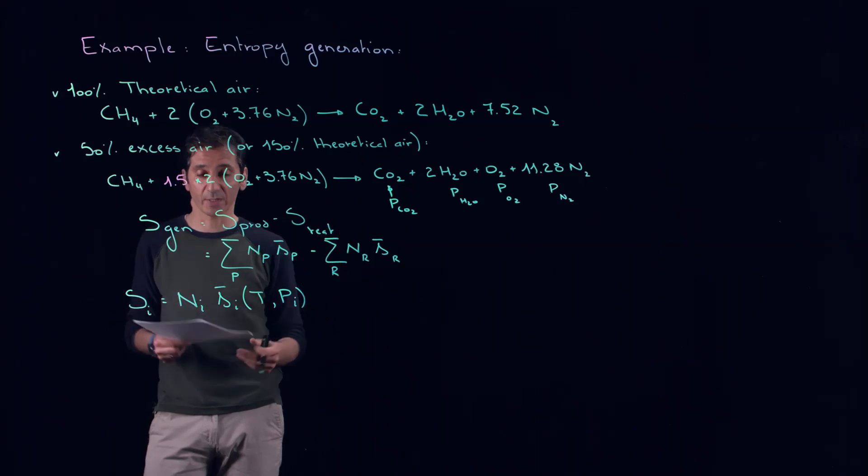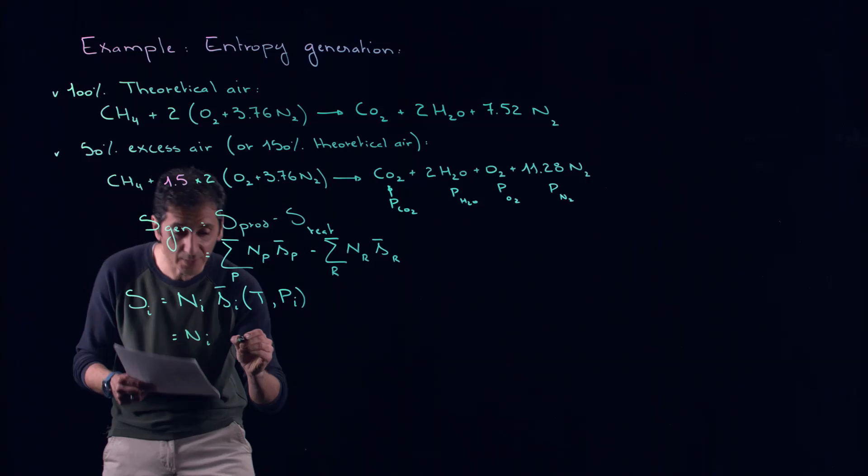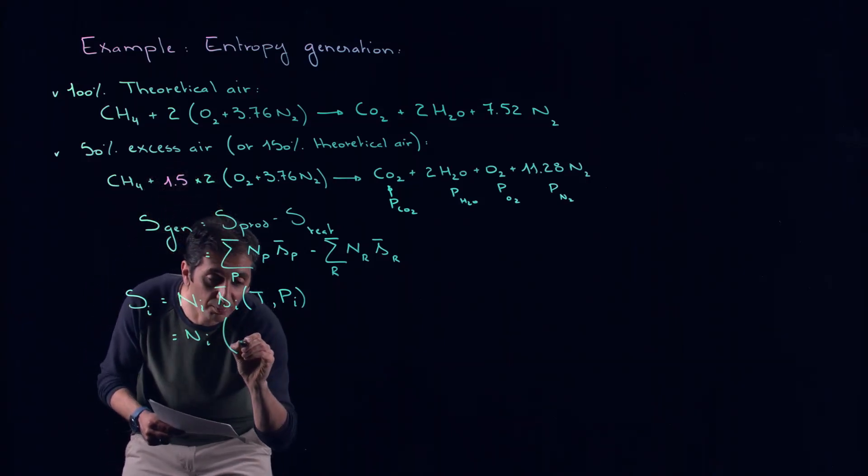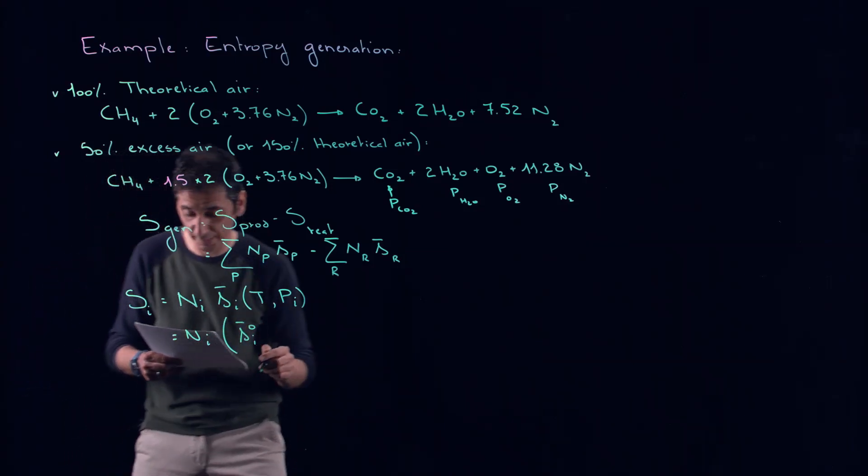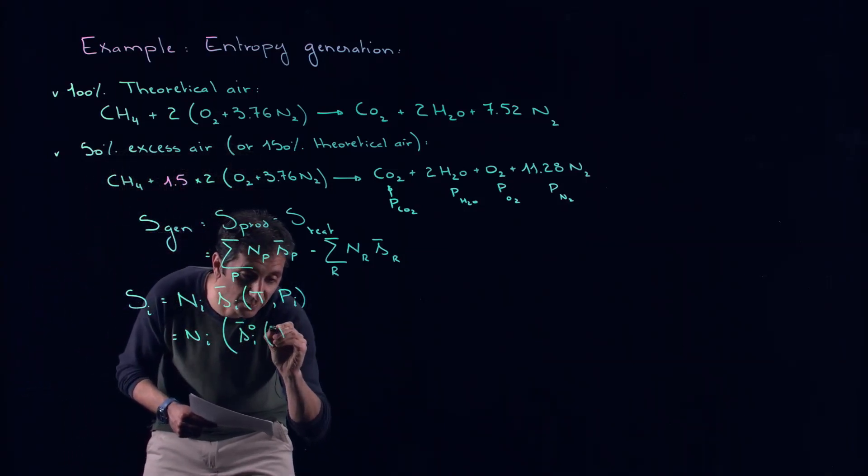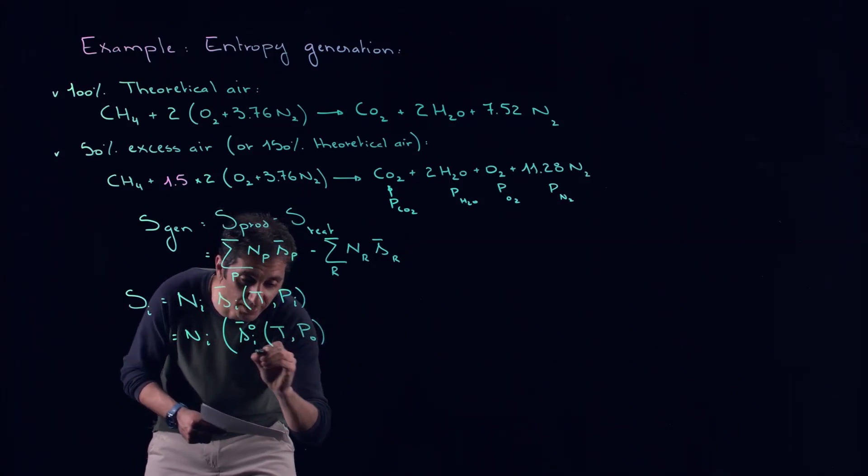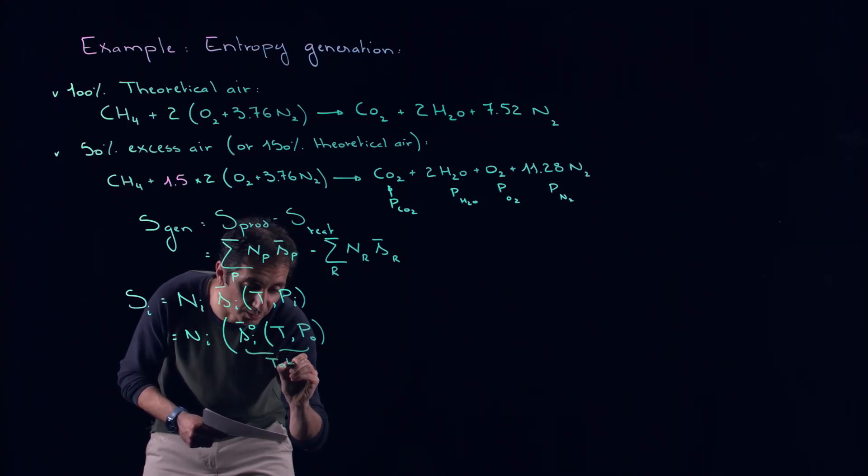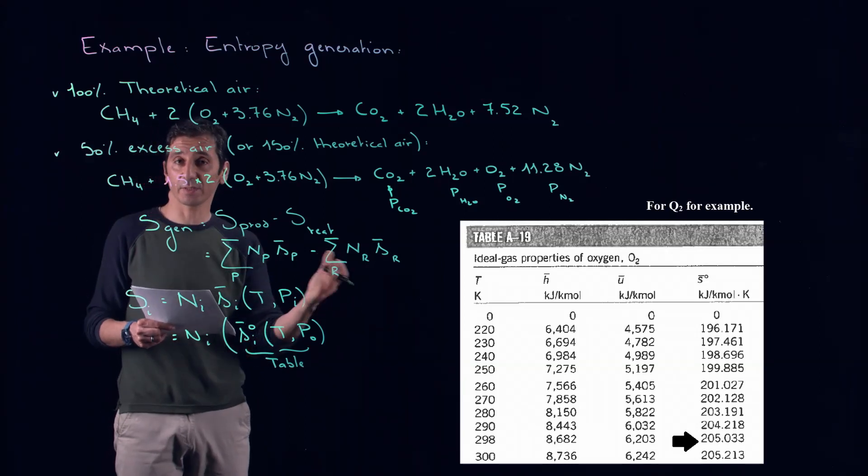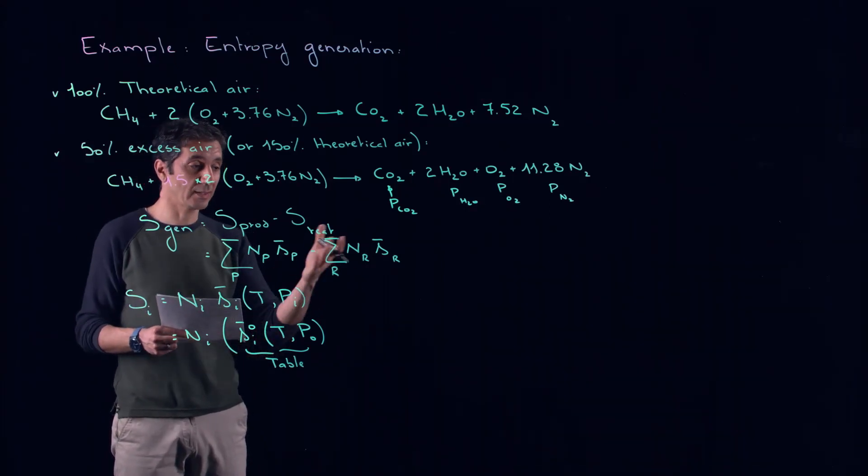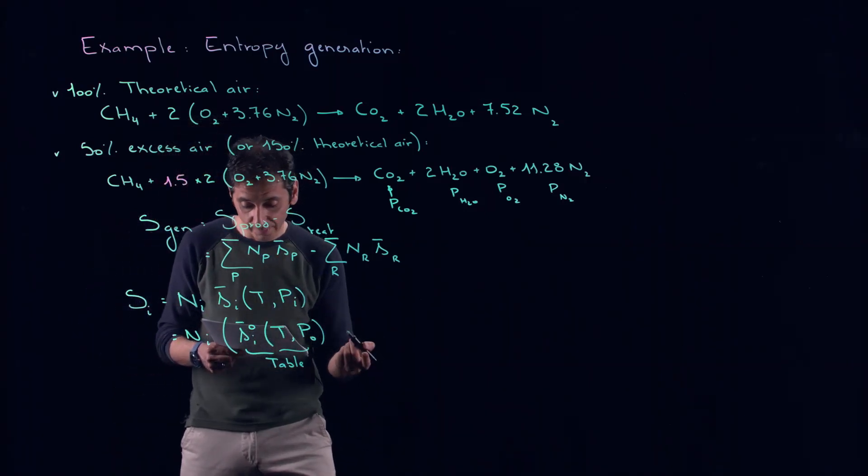This will lead to NI times now this term here will be SI zero bar, meaning this is our reference entropy at temperature T and P zero. This P zero we said is at one atmosphere and you get this from a table, the same table we use to get the enthalpy H bar.